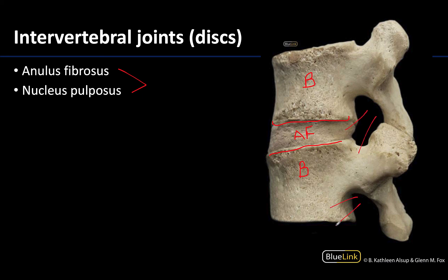So that is the intervertebral disc. These aren't the only joints associated with the vertebral column — you will also have articular facet joints throughout. You can see one right here, but these are the only ones we're going to have you identify in a practical setting. Thank you for your time and attention, and if you have any questions please feel free to reach out.